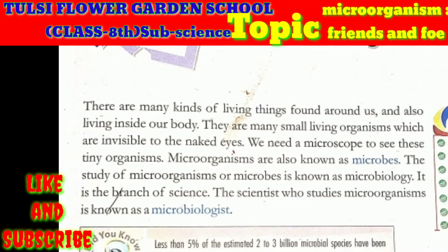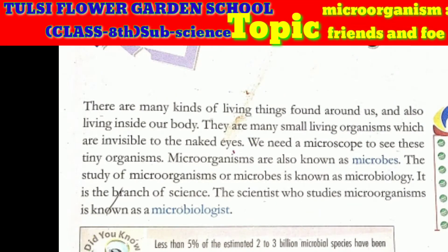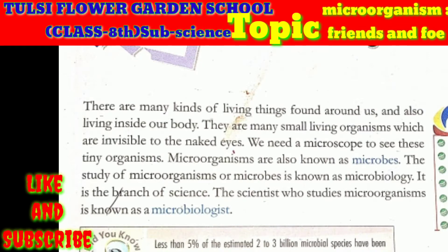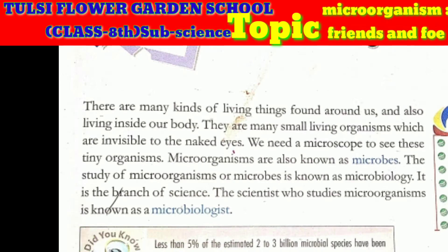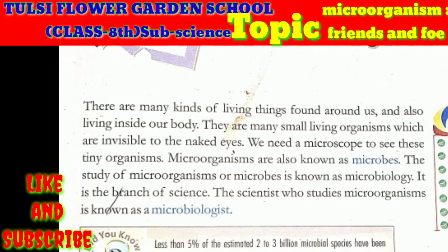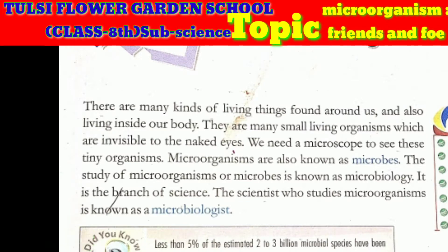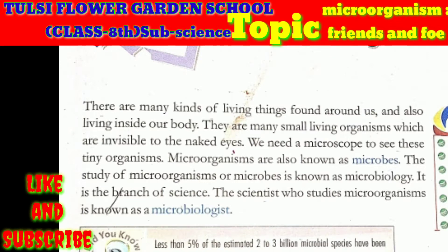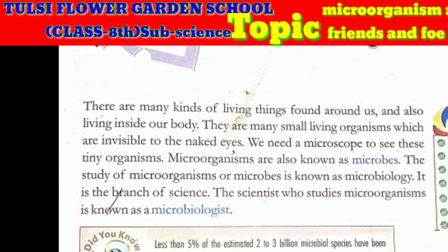There are many kinds of living things found around us and also living inside our body. There are many small living organisms which are invisible to the naked eye. We need a microscope to see these tiny organisms. Microorganisms are known as microbes.